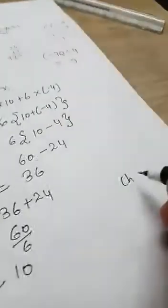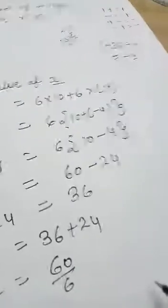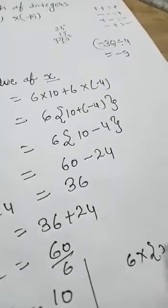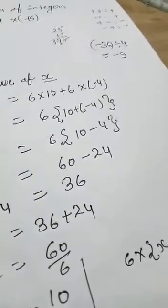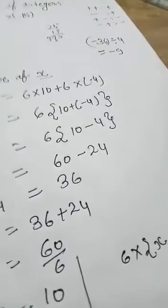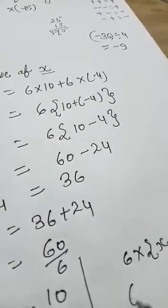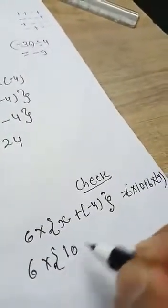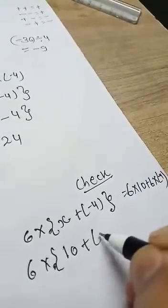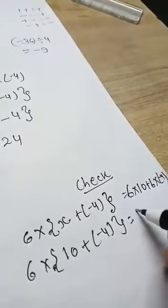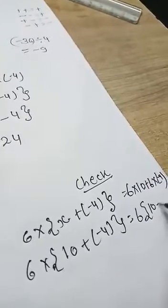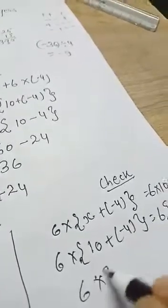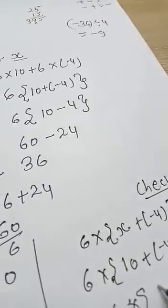So check it. Your question: 6 multiply x plus minus 4, 6 multiply 10 plus 6 multiply minus 4. 6 multiply value of x, value of x is equal to 10. So 6 multiply 10 plus minus 4.